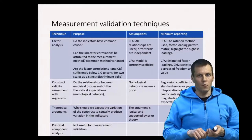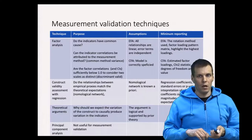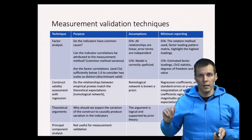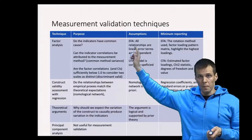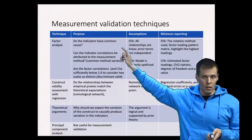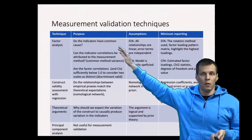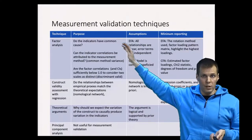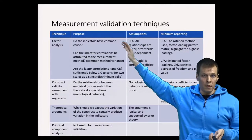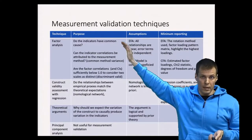Factor analysis is the most important technique for assessing validity. It can be used for three different purposes. The first is to assess whether indicators have a common cause. If indicators have a common cause, or if they share variation, that is an indication that they could measure the same thing.